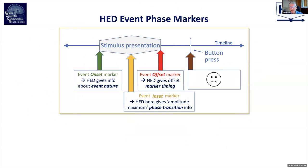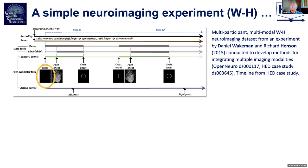A stimulus presentation — for example a sound — will have an onset marker and an offset marker. The offset marker can be implicitly given by providing the onset marker and a duration, from which the offset can be calculated. There can also be an inset marker to reflect that this sound swelled and then waned. The first experiment we seriously worked on using the most recent generation of HED was one contributed by Henson and Wakeman to Open Neuro some years ago.